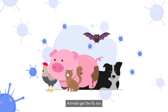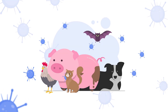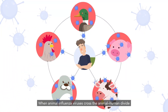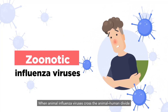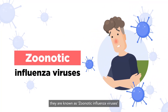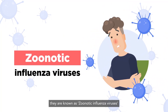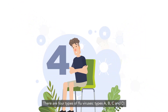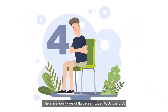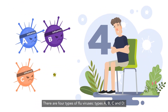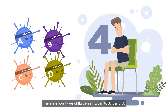Animals get the flu too. When animal influenza viruses cross the animal-human divide, they are known as zoonotic influenza viruses. There are four types of flu viruses: types A, B, C and D.